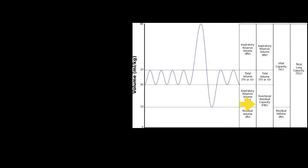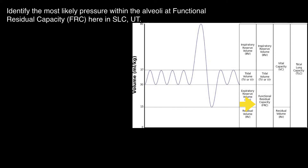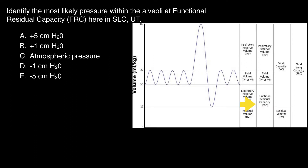To put this in context, here's a question: What is the most likely pressure within each of the alveoli at functional residual capacity here in Salt Lake City? Is it a positive pressure — positive 5 or positive 1? Or is it atmospheric pressure? Or is it a negative pressure — negative 1 or negative 5?